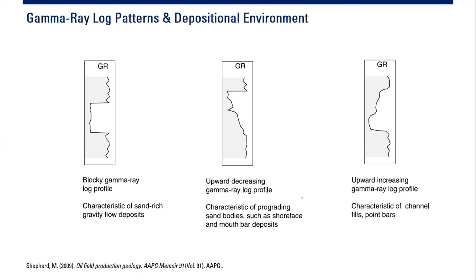The first profile is the blocky gamma ray log profile — the keyword here is 'blocky.' So whenever your geologist or petrophysicist friends say 'blocky gamma ray log,' you can capture this case. We can correlate this blocky gamma ray log profile with what you can see here: it is characteristic of sandwich gravity flow deposits.